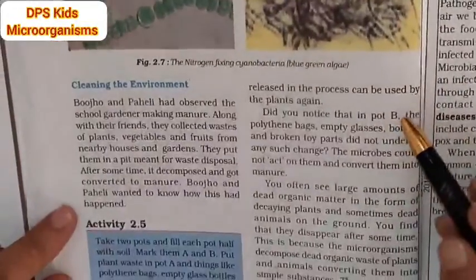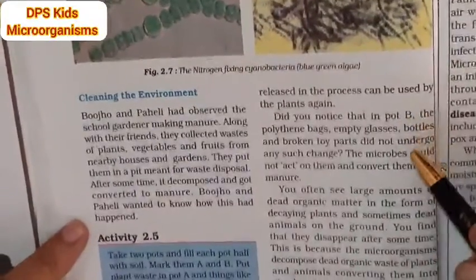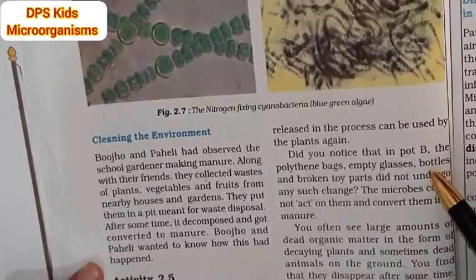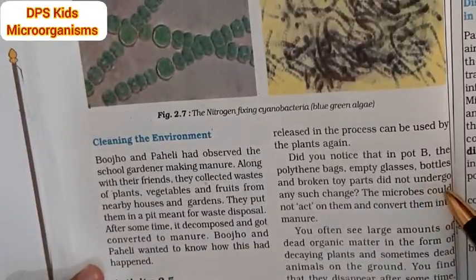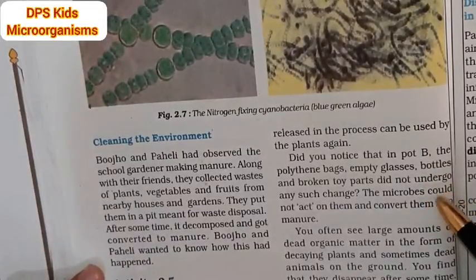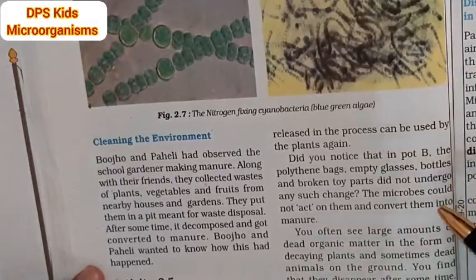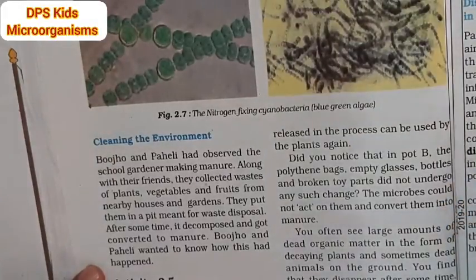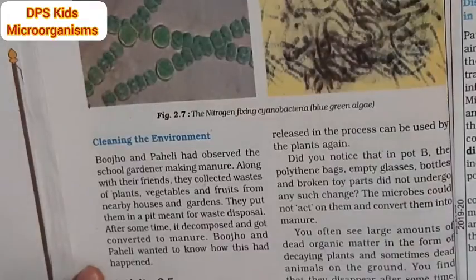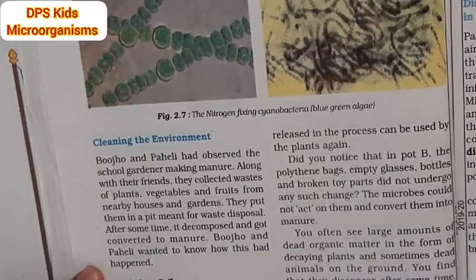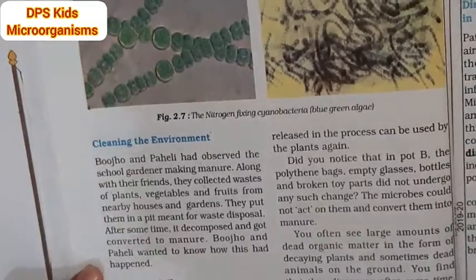The nutrients released in the process can be used by the plants again. Did you notice that in pot B, the polythene bags, empty glasses, bottles and broken toy parts did not undergo any such change? In pot B, the microbes could not act on them and convert them into manure. There is no action by microbes on these materials.